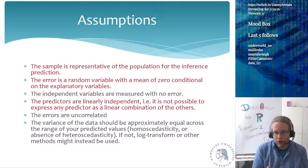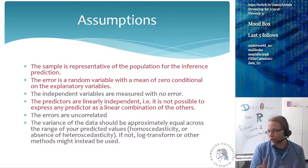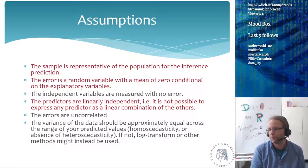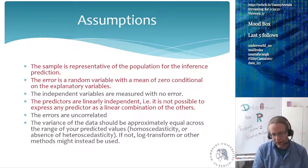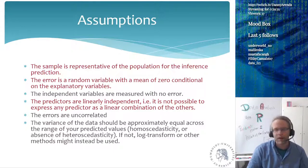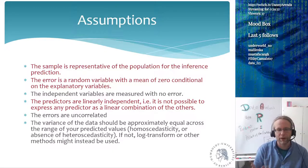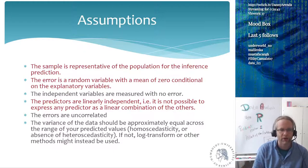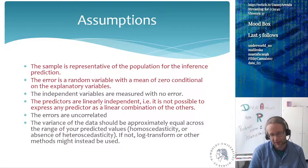Errors are uncorrelated, meaning the errors cannot be correlated to any of your predictor variables. Generally people don't even test this, but it is one of the assumptions. The last one, which is very important but often overlooked because the word is too hard to pronounce, is that the variance of your data should be approximately equal across the range of your predicted values — this is called homoscedasticity, or absence of heteroscedasticity.